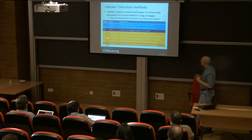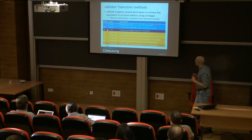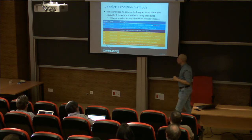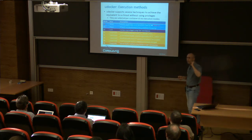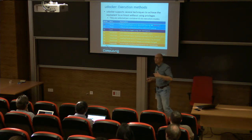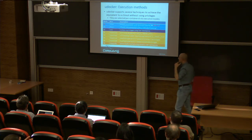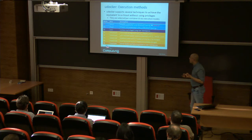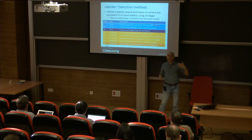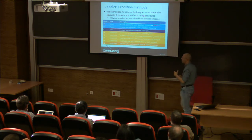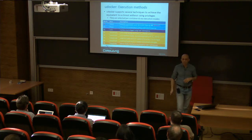Another mode of execution that is becoming faster and more interesting is the fake chroot system, which we are changing heavily, and that allows system call interception at the level of library calls. We can do the same path translation but at the library call level. And the last system we use is Singularity, which allows also doing a chroot-like operation. If Singularity is available, uDocker will run containers transparently with Singularity as well — you just choose.